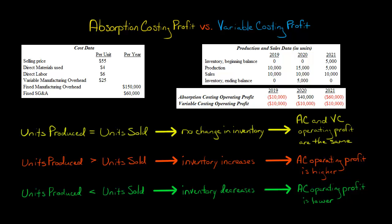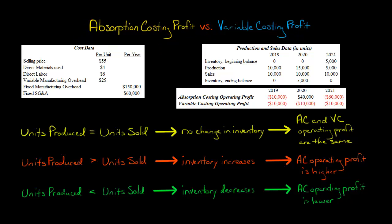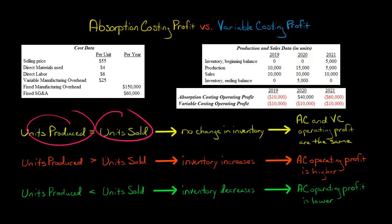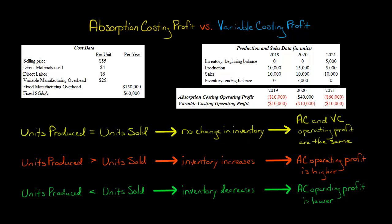In this video, I want to summarize the ways in which operating profit differs based on whether a company uses absorption costing or variable costing. The key is to look at the difference between units produced and units sold. If the units produced are equal to the number of units sold, there's not going to be any change in the company's inventory balance, and so absorption costing operating profit and variable costing operating profit would actually be identical.